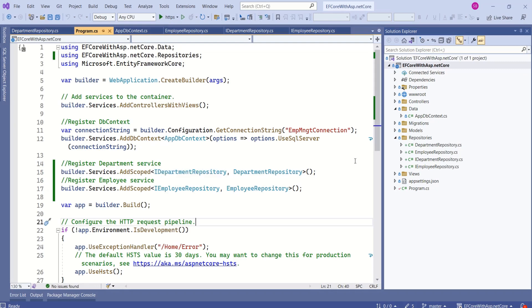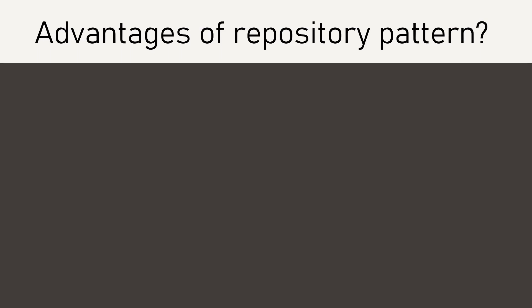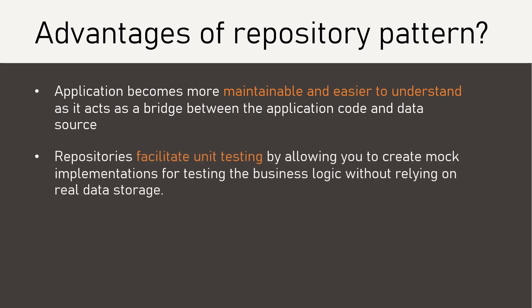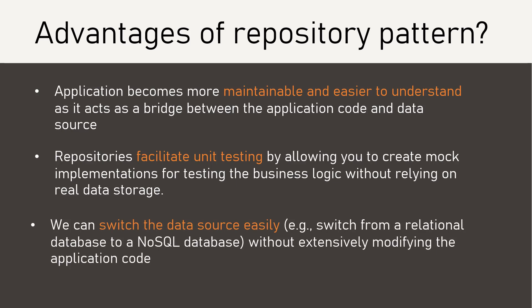We have successfully implemented the repository pattern in our application. In upcoming sessions, we are going to interact with these repositories. The repository pattern offers several benefits: the application becomes more maintainable and easier to understand as it acts as a bridge between application code and the data source; it facilitates unit testing by allowing mock implementations to test business logic without relying on real data storage; and we can switch the data source easily without extensively modifying the application code. That's it for today's session. See you soon in the next video. Thank you.